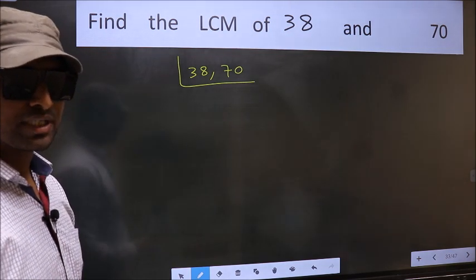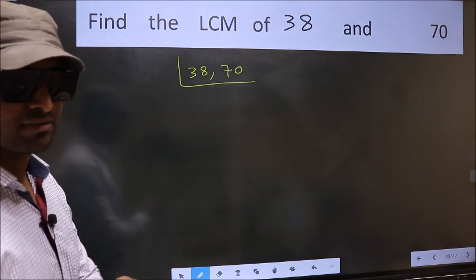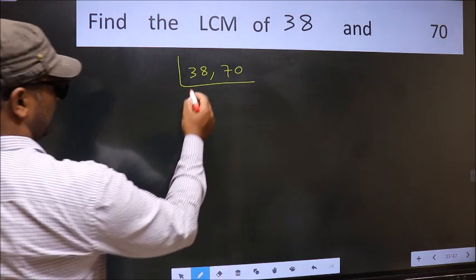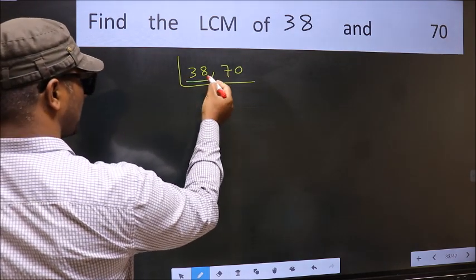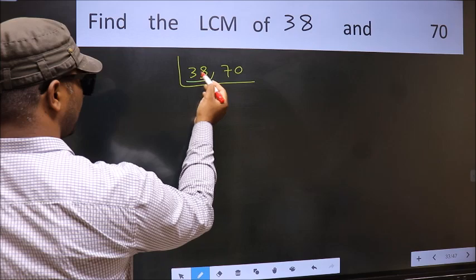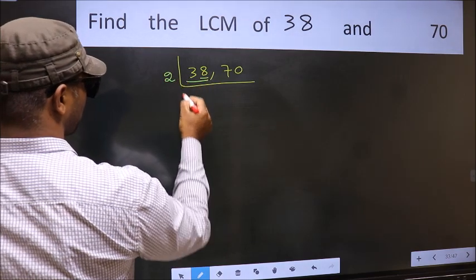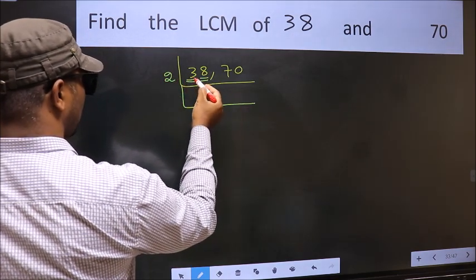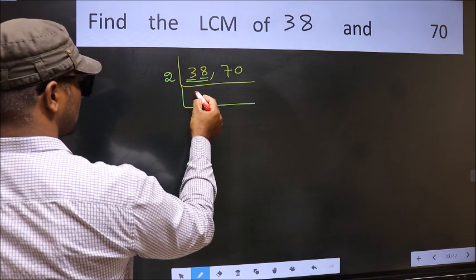Now you should focus on the first number which is 38 here. For this number, last digit 8, even, so take 2. First number 3, a number close to 3 in 2 table is 2, 1, 2.